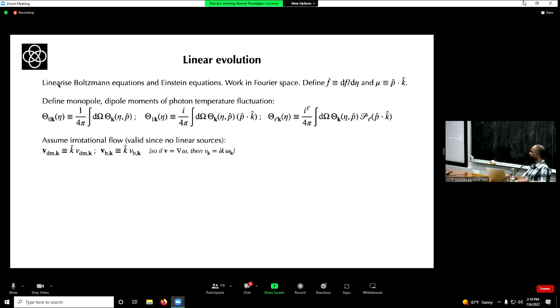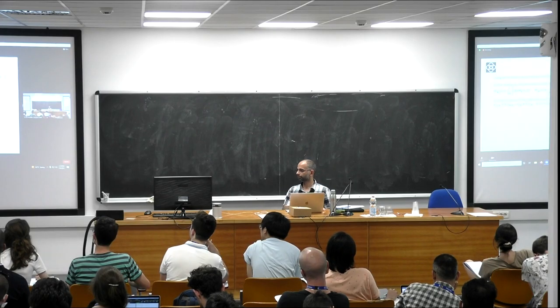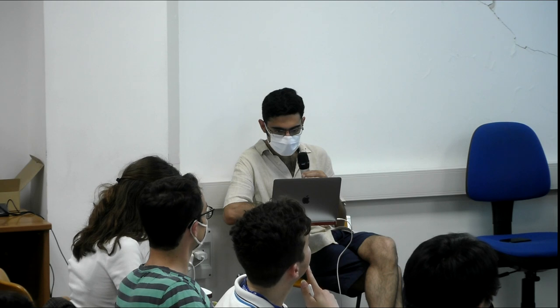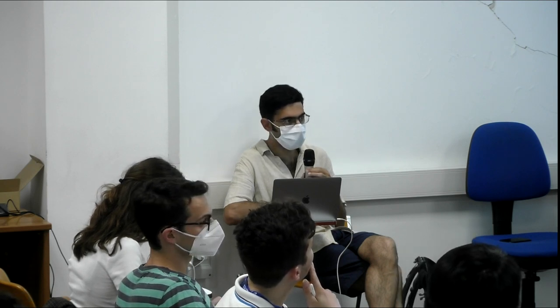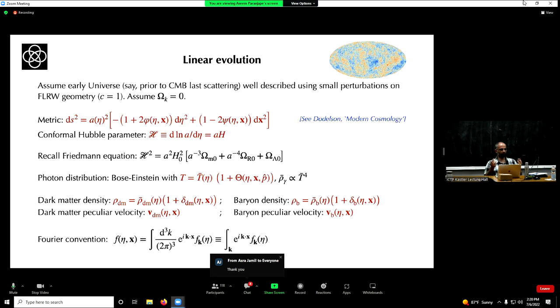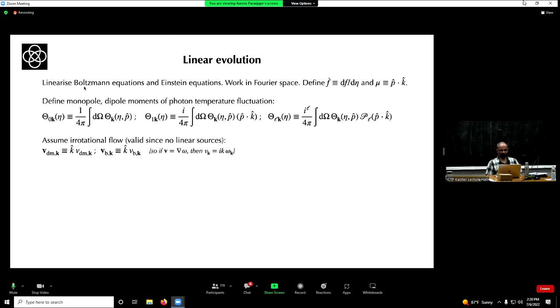On the question of dark matter interacting with space-time: that will be treated very soon through gravity. On peculiar velocities: in a homogeneous isotropic FLRW universe, fluid elements hold their x-coordinates constant. But in an inhomogeneous perturbed FLRW universe, x will no longer remain constant — fluid elements respond to the inhomogeneities. That response is a velocity, and that is what the peculiar velocity fields are tracking.